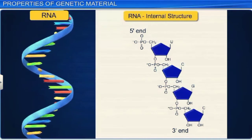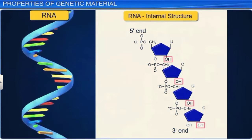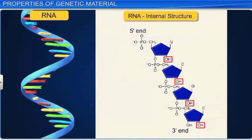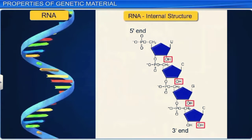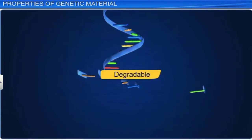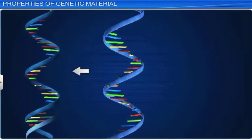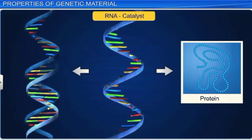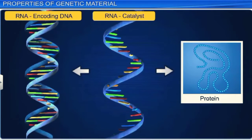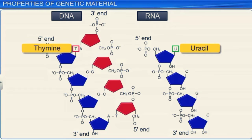RNA, on the other hand, is much more liable to change, due to the presence of the very reactive 2'OH group that is present in its every nucleotide. This makes RNA more degradable and reactive than DNA. Also, it enables RNA to act as a catalyst in several biochemical reactions in living systems. Moreover, DNA has thymine instead of uracil that is present in RNA, which makes it more stable.